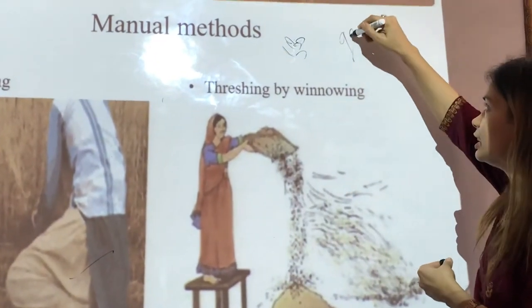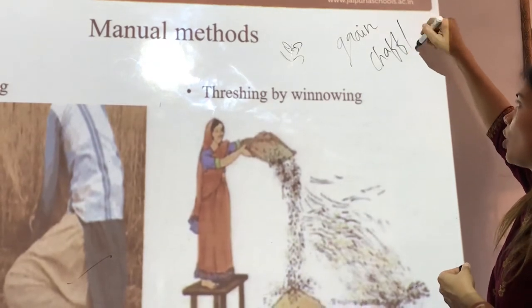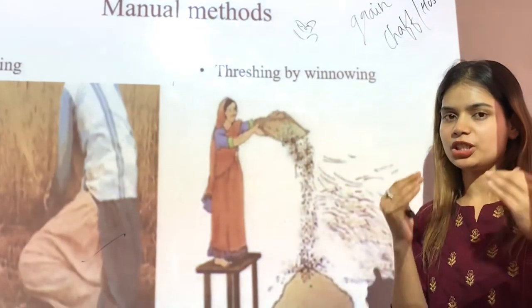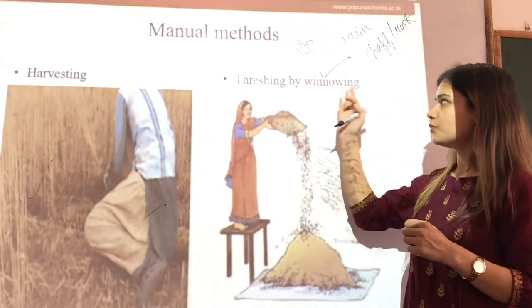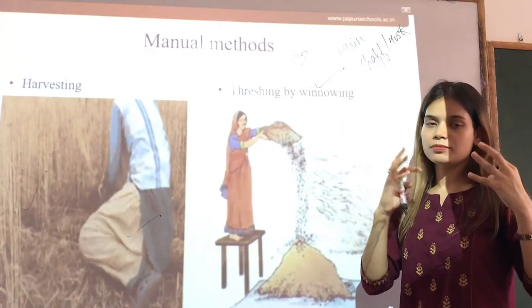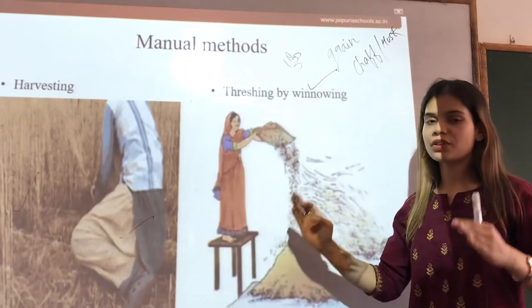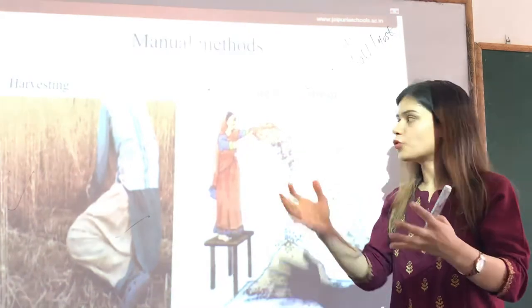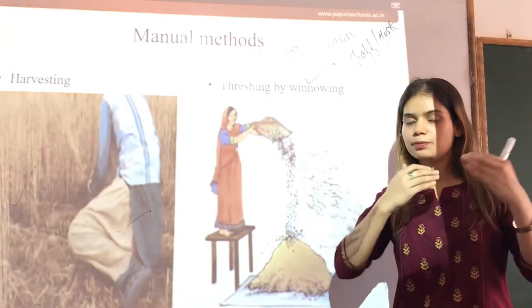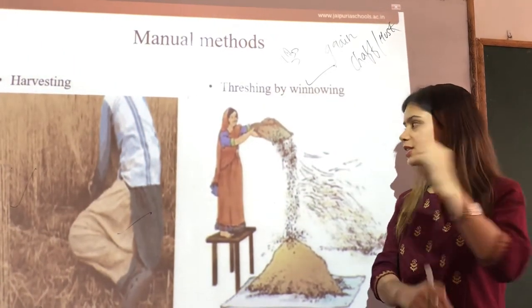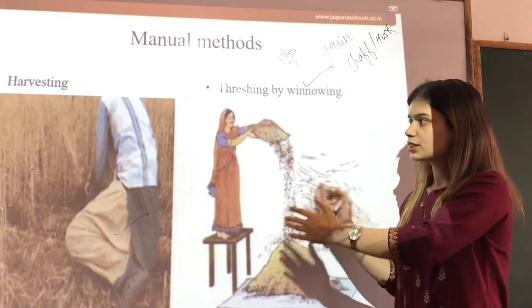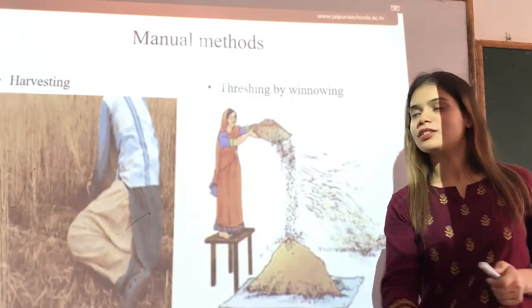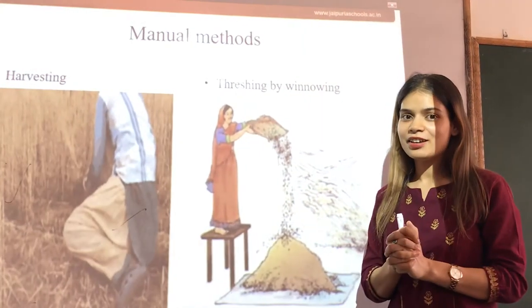Threshing is the separation of grain from the chaff, or you can say husk. The most commonly used method in India for threshing is winnowing. In winnowing, the farmers stand somewhere at a height, and from that height the crop is made to fall. The chaff or husk, being lighter, blows away with the wind, whereas the grain, which is heavier, settles at one point. This is one way by which we can separate the grain from the husk. I hope you must have seen this kind of scene in villages or also in some cities.